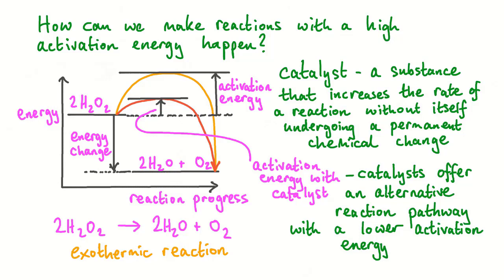Catalysts speed up the rate of a chemical reaction. They do this by offering an alternative reaction pathway or route for the reaction to take place. Most importantly, this alternative reaction pathway has a reduced or lower activation energy. With a lower activation energy, a much greater percentage of the collisions involving reactant particles will lead to bonds breaking and a reaction occurring. More successful collisions occur every second and the rate of reaction is increased.